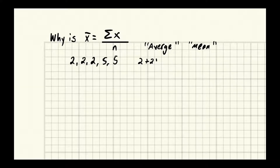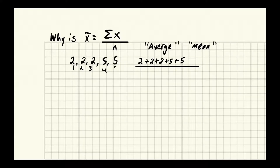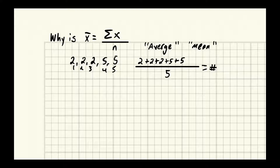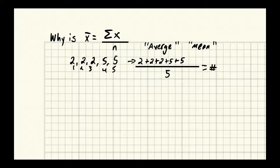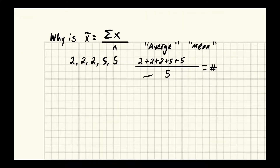Supposedly, if we just add the numbers — 2 plus 2 plus 2 plus 5 plus 5 — and divide by the number of numbers, we have 5 numbers so we divide by 5, we'll get a number that magically fulfills this requirement. On one level it makes sense, because these smaller numbers, since there are more of them, are going to have a bigger sway. These numbers are different — 2, 2, 2 versus the two 5s — yet they each get exactly one representation in the denominator.